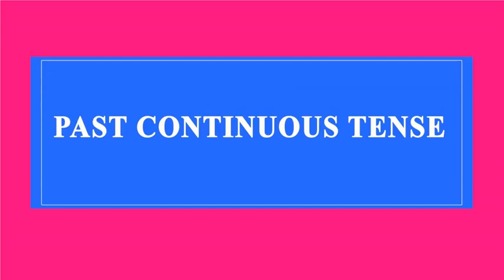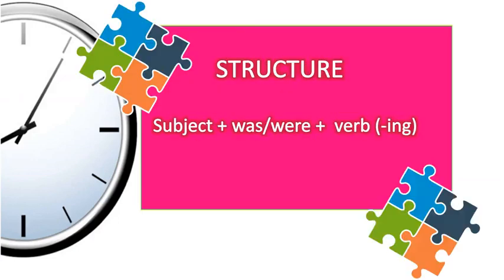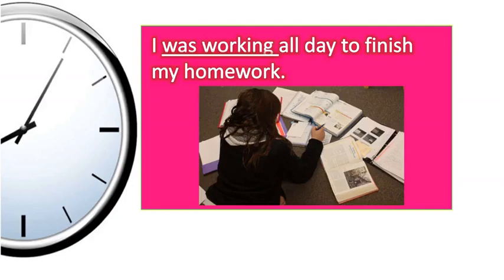Past continuous. This tense is used to describe an action that was ongoing. This action may have been interrupted or another action also occurred. The structure is subject plus was or were plus the verb ending in -ing. For example: